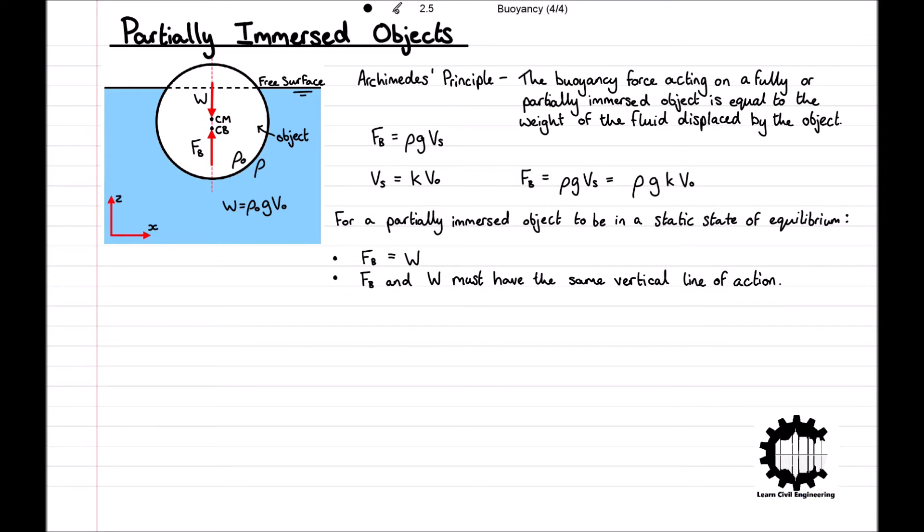If the object is in static equilibrium and both are homogeneous, Fb = w. Substituting our equations, we get ρgkV₀ = ρ₀gV₀. Rearranging for k, we get k = ρ₀/ρ. We can use this to calculate the percentage of an object that is immersed without knowing the volume or calculating any forces.